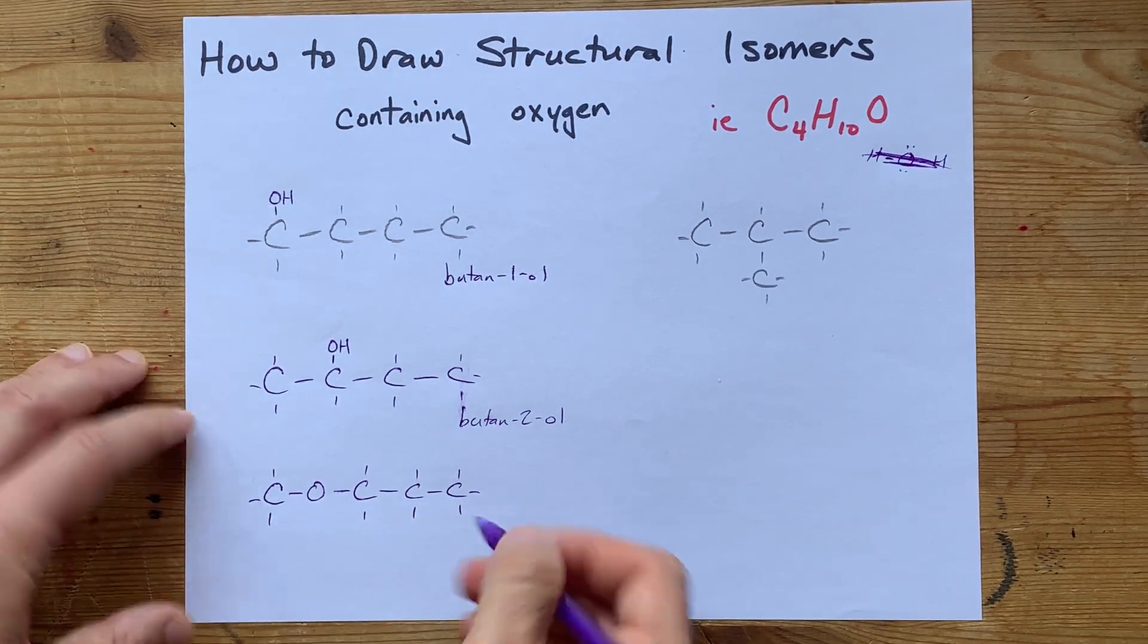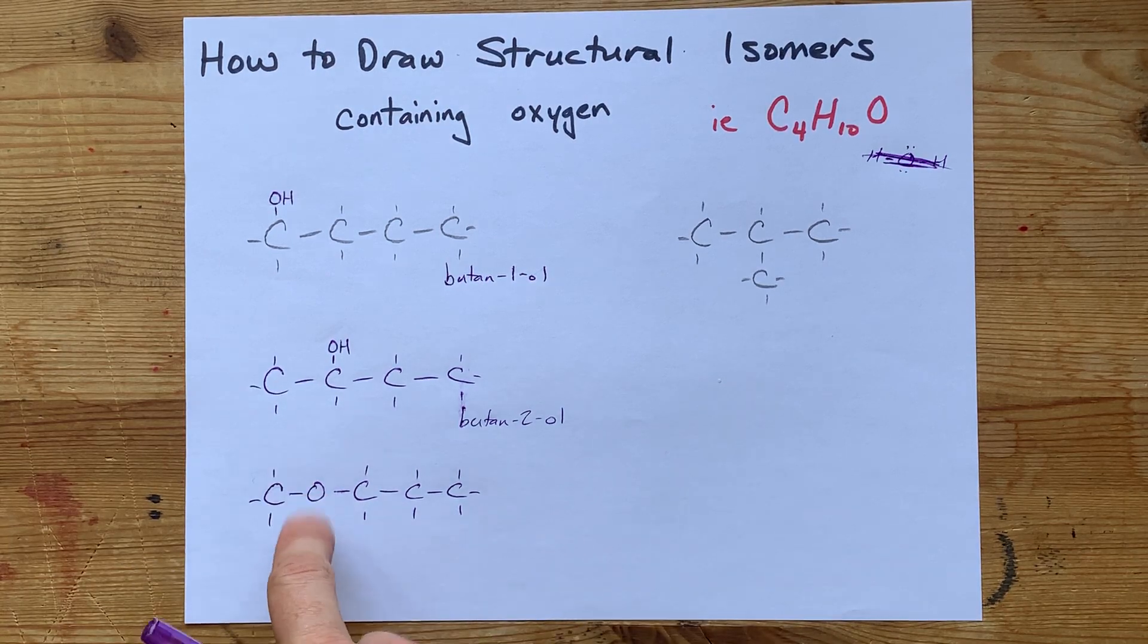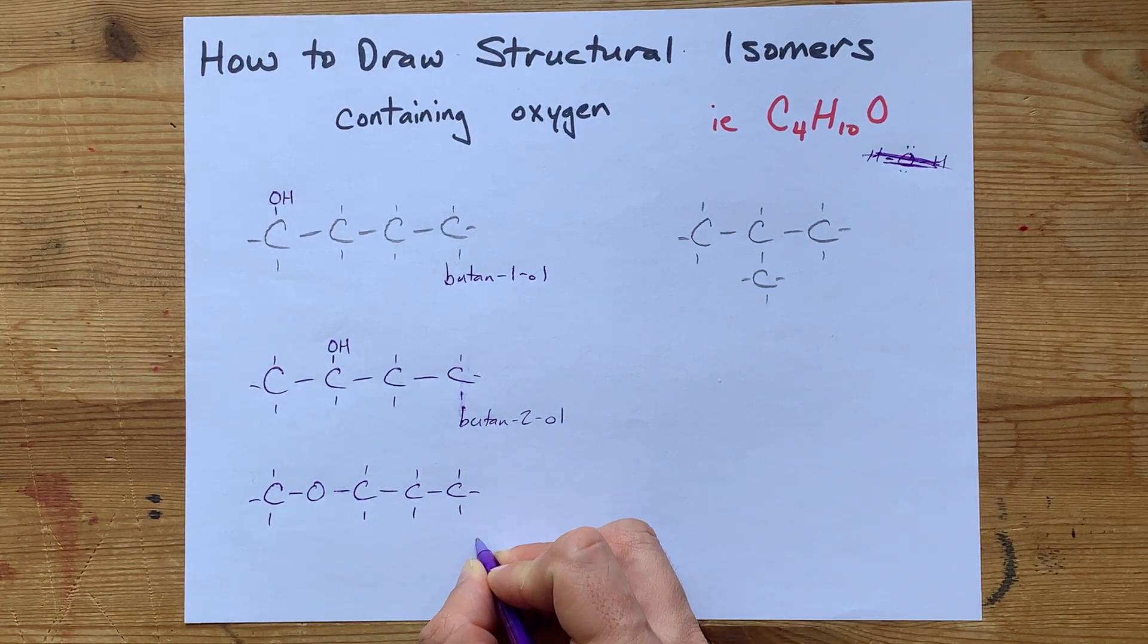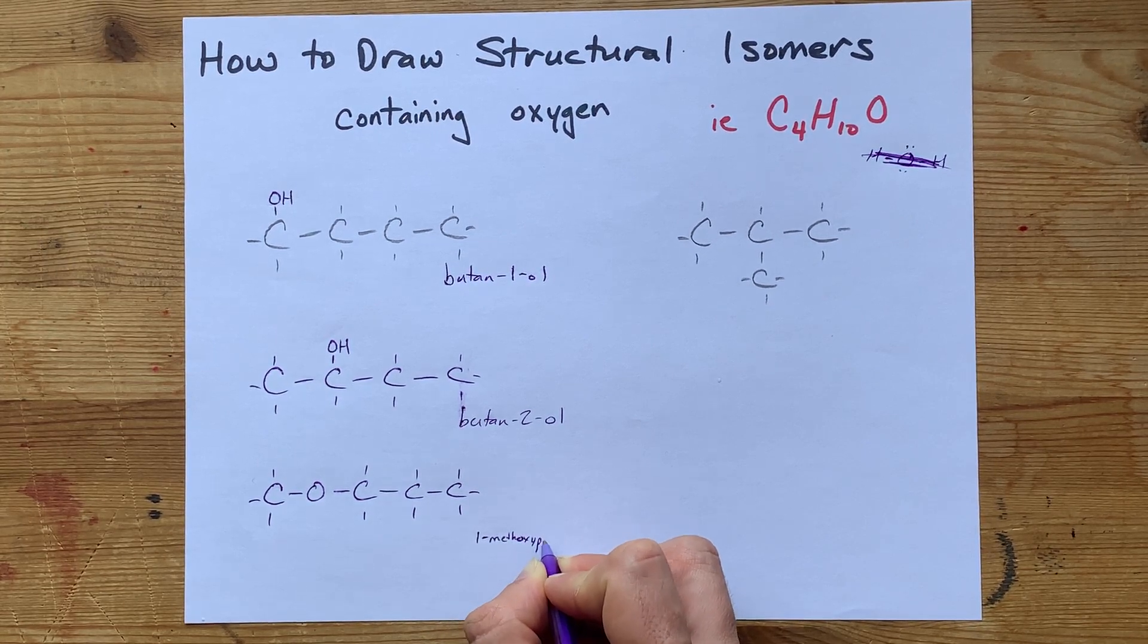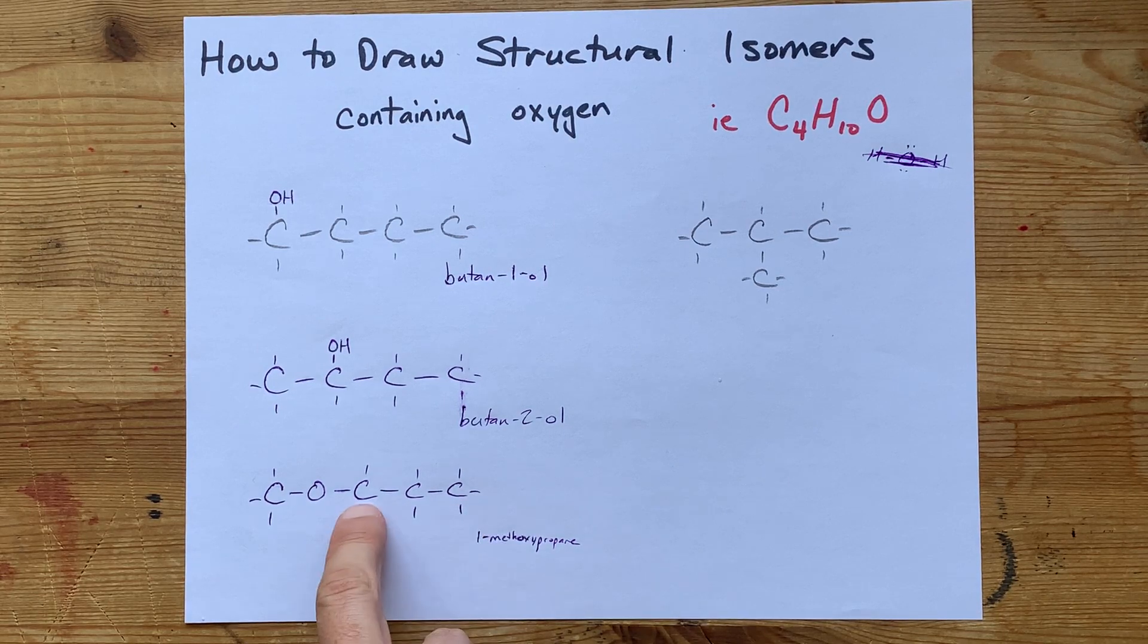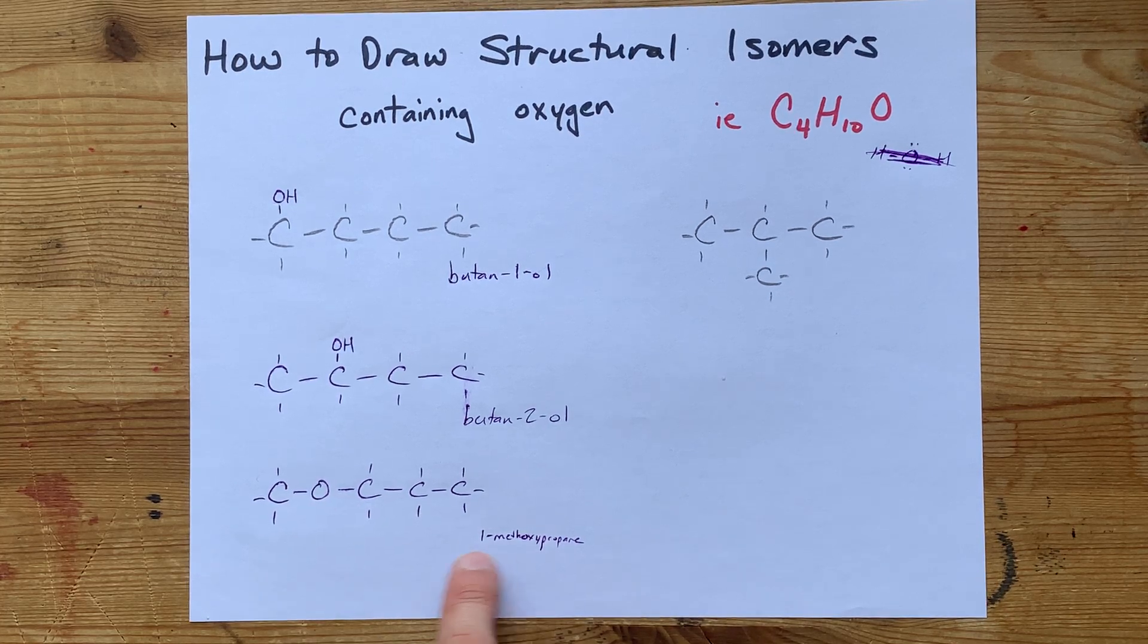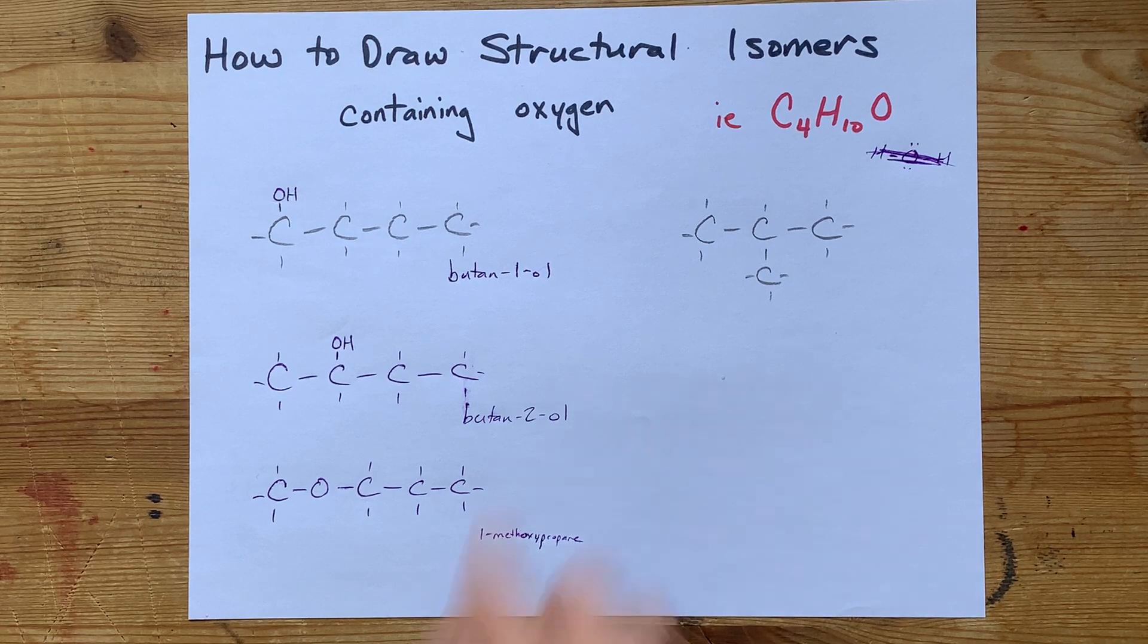C4H10O. There you go. This is really going to emphasize that I'm actually just inserting the oxygen in different places. What is this called? It's called 1-methoxypropane. That's because I have a propane group here, and I have a methyl group connected via oxygen. That's methoxy, and it's connected to carbon number 1 of the propane chain.